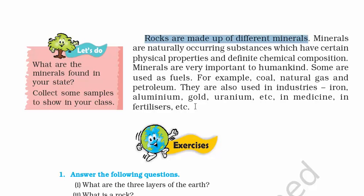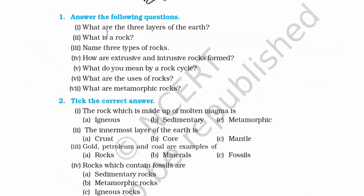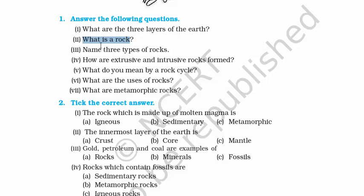With this we have come to an end of Chapter 2 of Class 7 NCERT. Let's answer some questions. First question: What are the three layers of earth? The three layers of earth are crust, mantle, and core. Second question: What is a rock? Rock is made up of minerals that form a natural land mass and is also the earth's crust. Third question: Name three types of rocks. The three types of rocks are sedimentary, igneous, and metamorphic.